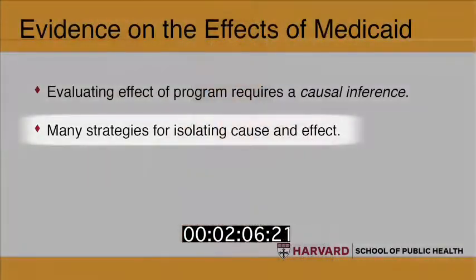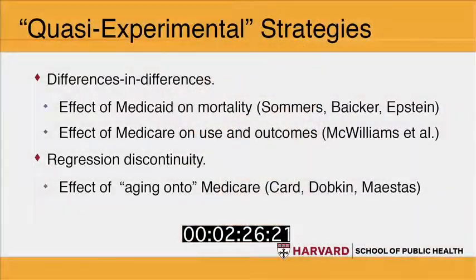There are a lot of sophisticated strategies for doing that. That simple comparison is clearly not one of them, but there are many others that involve using variation in which states cover which people and using program rules to try to isolate the effect of the program itself. There is a real danger in just using observation of what you see. Quasi-experimental approaches — the word used for things like comparing different states with different program eligibility rules, or comparing populations who are just eligible versus just not eligible based on some factor like income or age — can be very helpful.